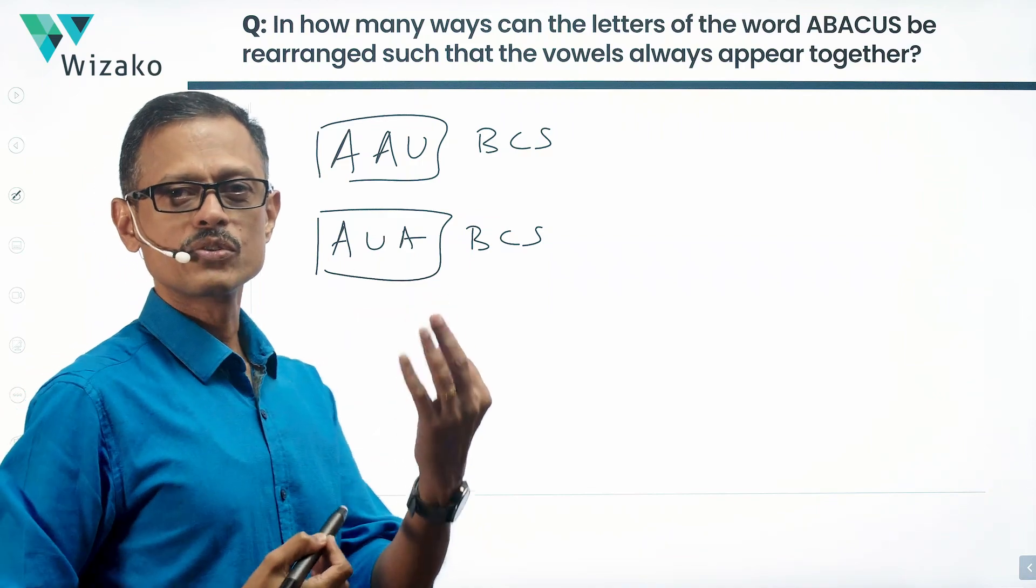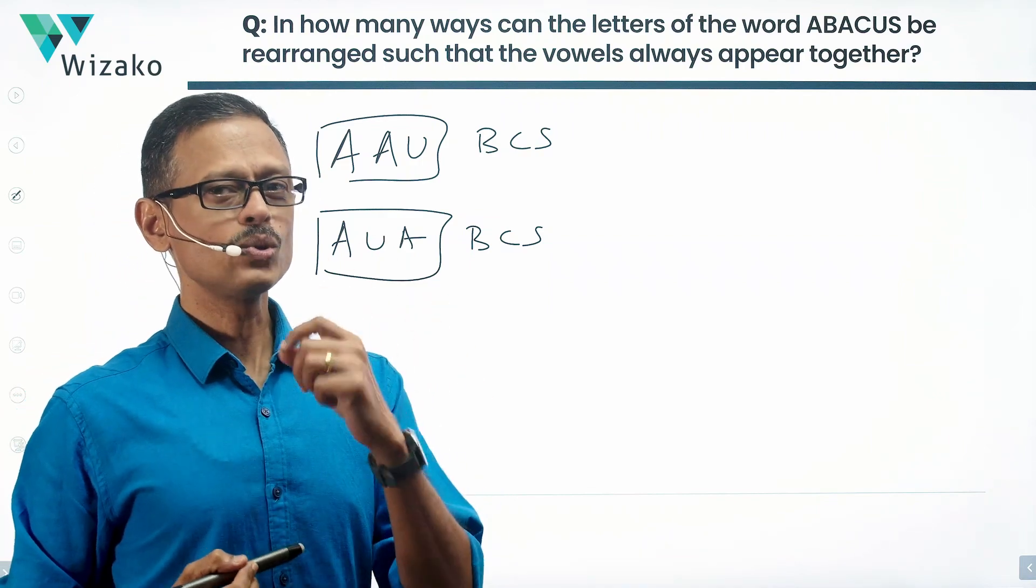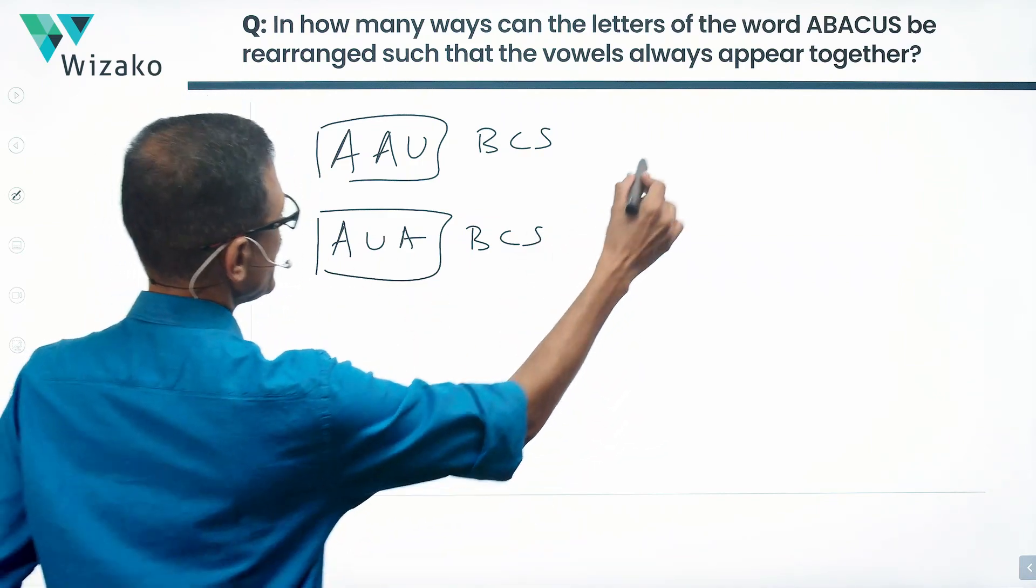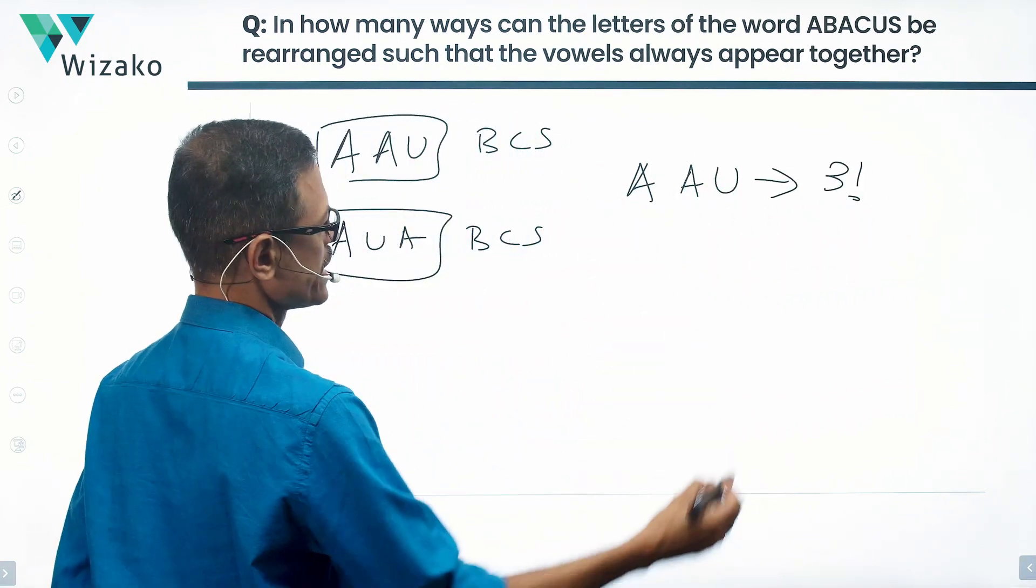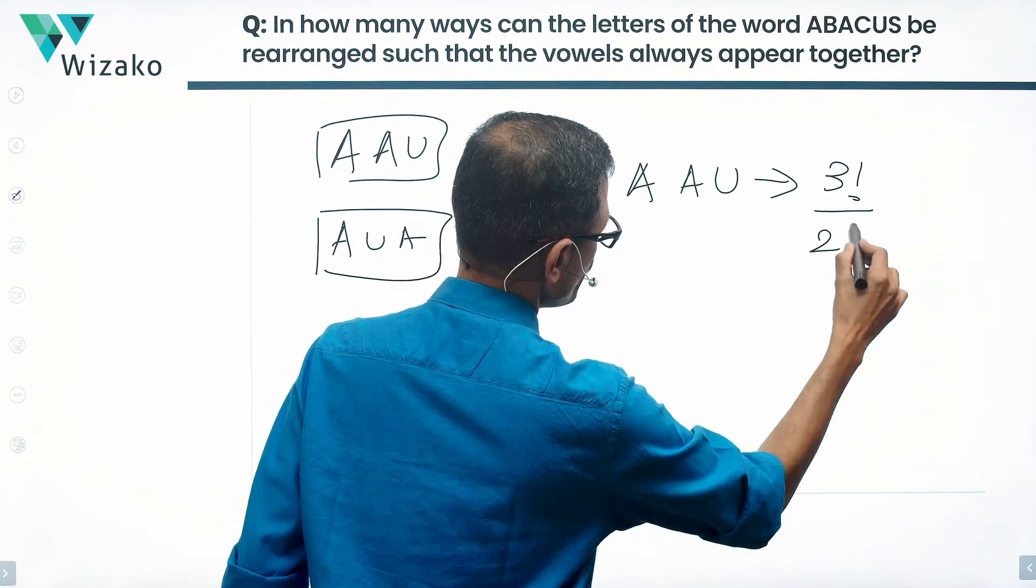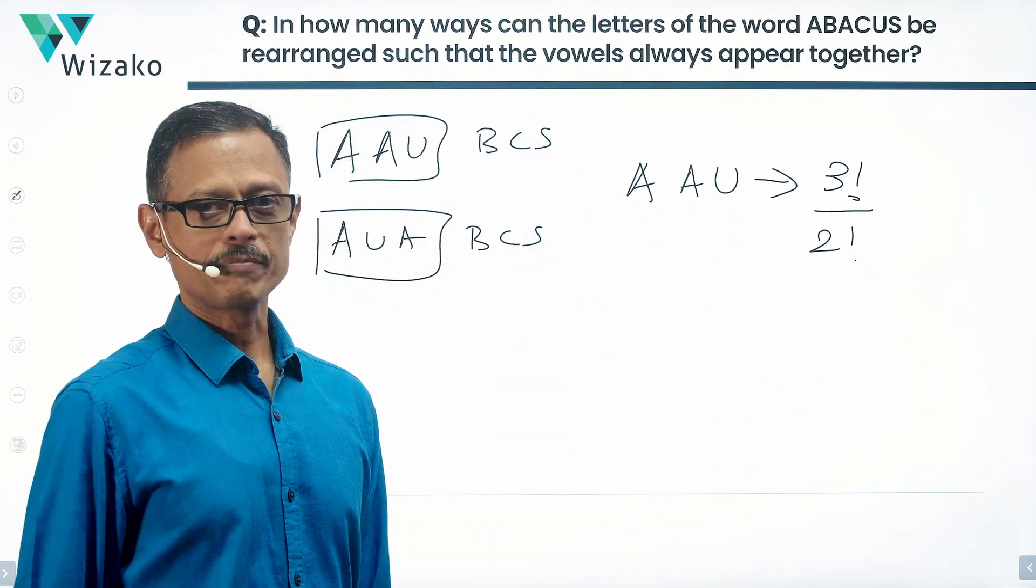Three letters, so three factorial, but two of these letters are the same. So this A, A, U as a unit can reorder in three factorial ways because it's a three-letter word, divided by two factorial because two of these letters are same.